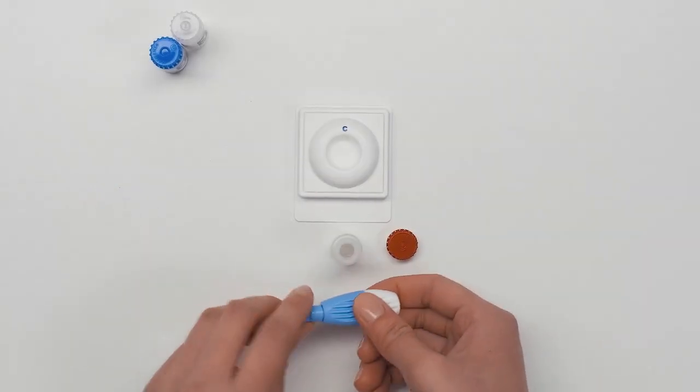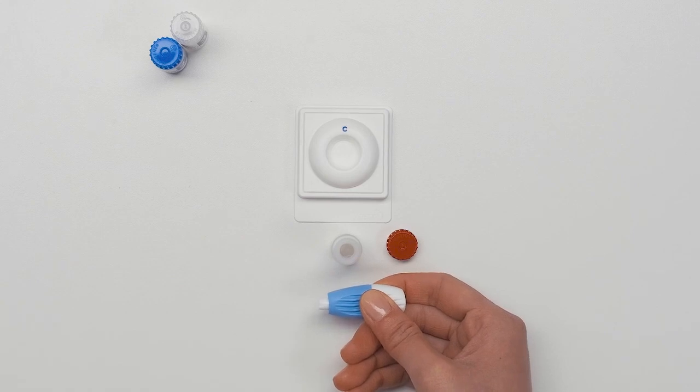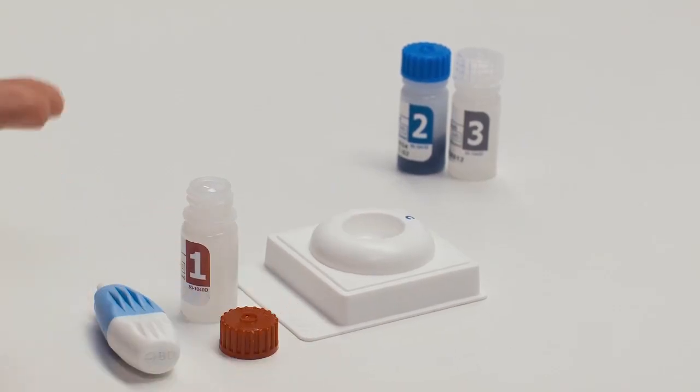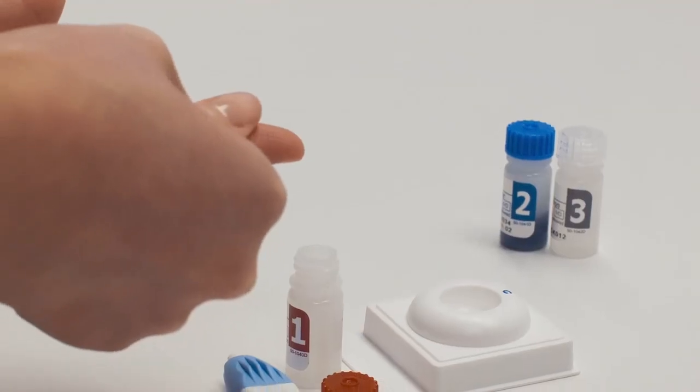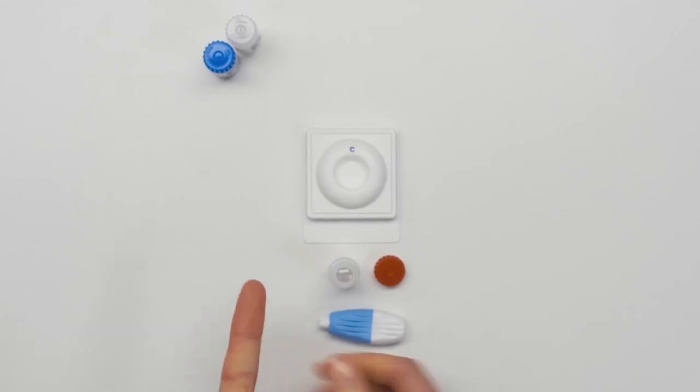Twist and pull the blue tip out of the lancet and place aside. Rub your finger until warm. Place the lancet on the side of fingertip. Press hard until you hear a click.